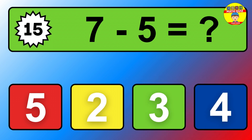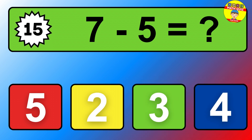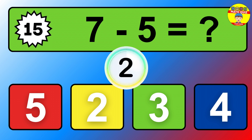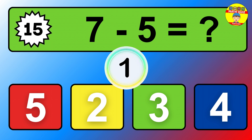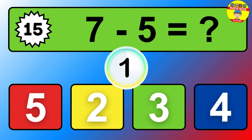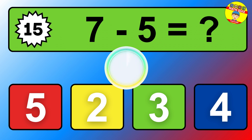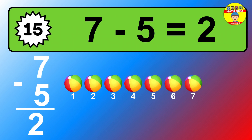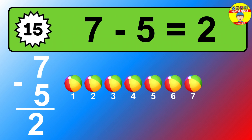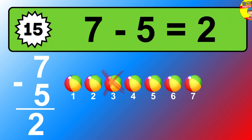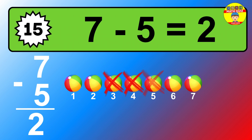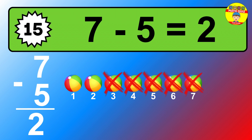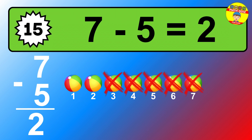Question fifteen: seven minus five equals what? So the answer is seven minus five is two. Let's count it. One, two.